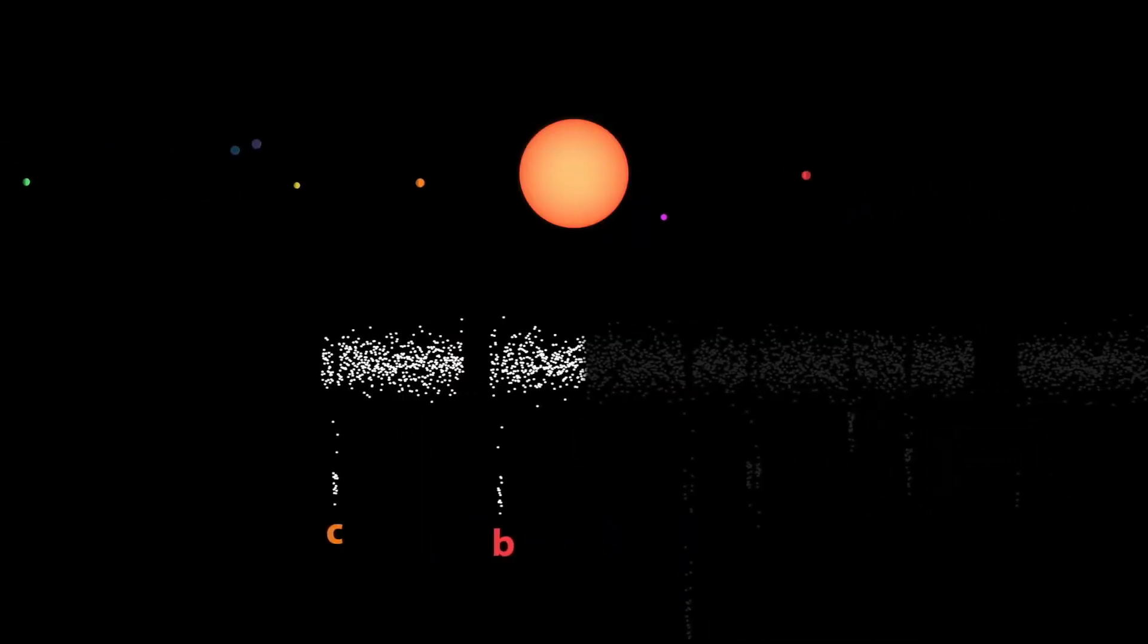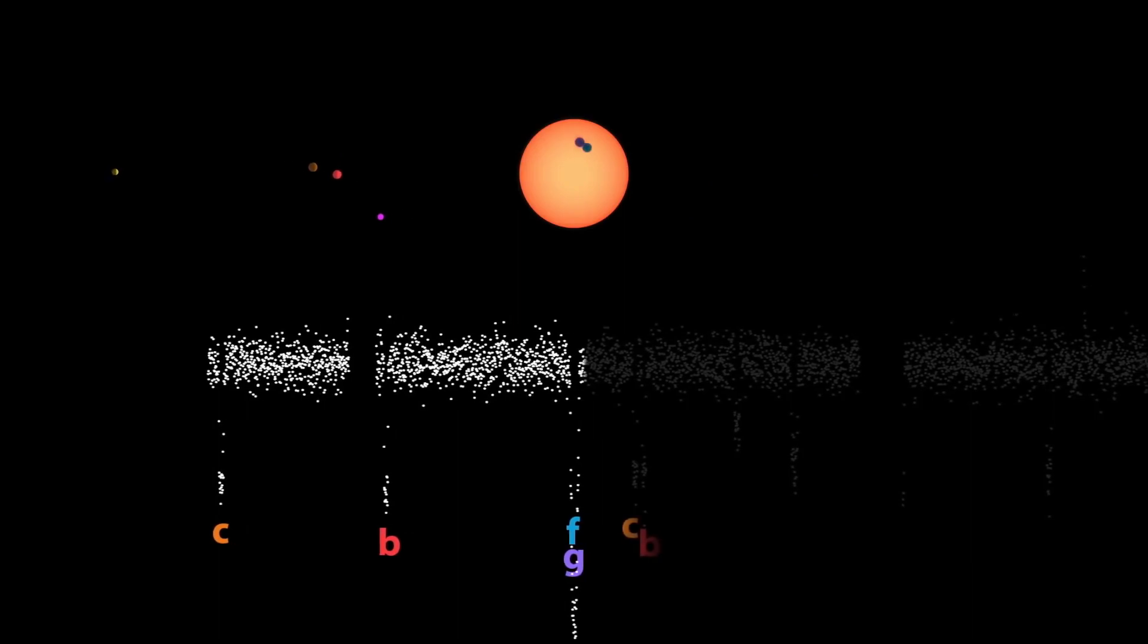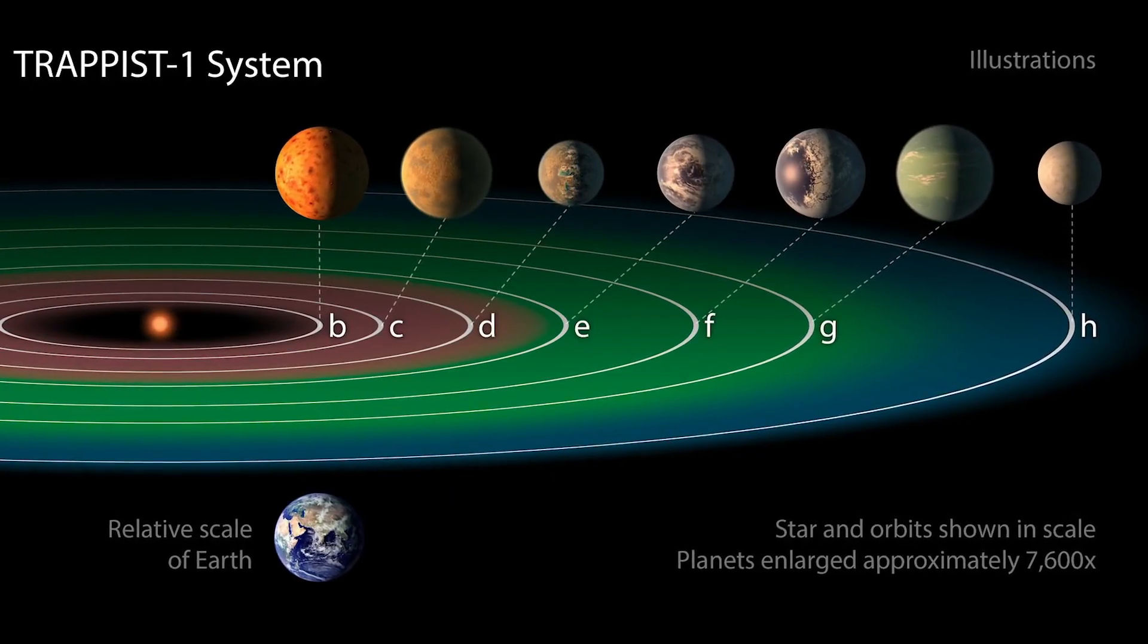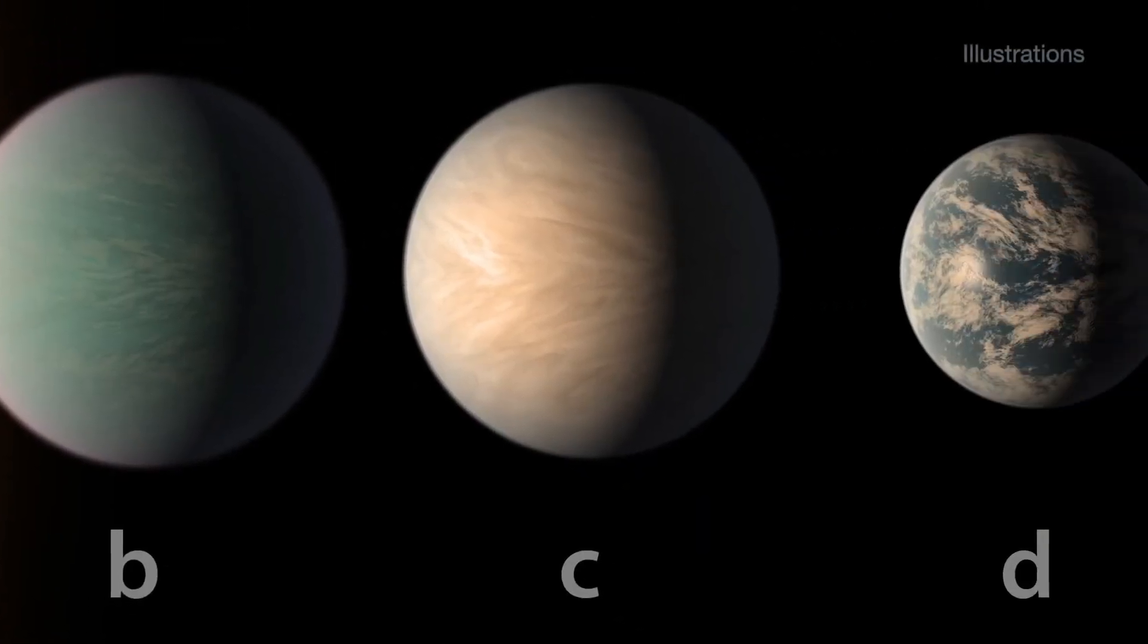Pierre Olivier Lagage from CEA, who was also a co-author on the article, said this planet is locked in place by its tides. This means that one side of the planet is always facing the star and the other side is always in the dark.